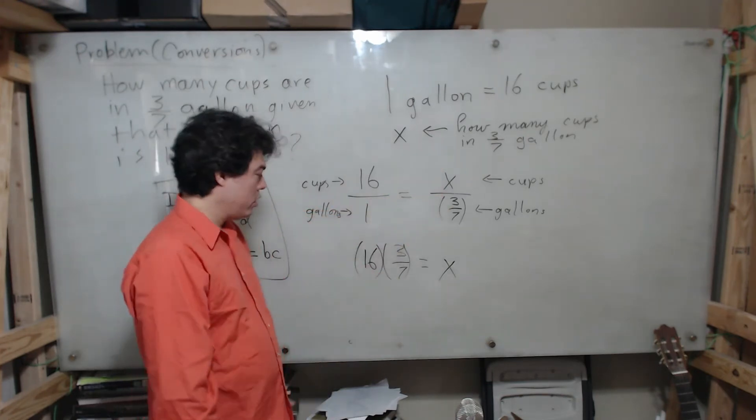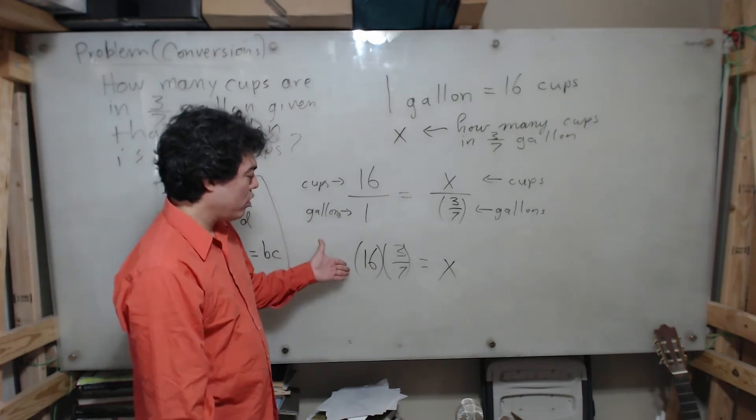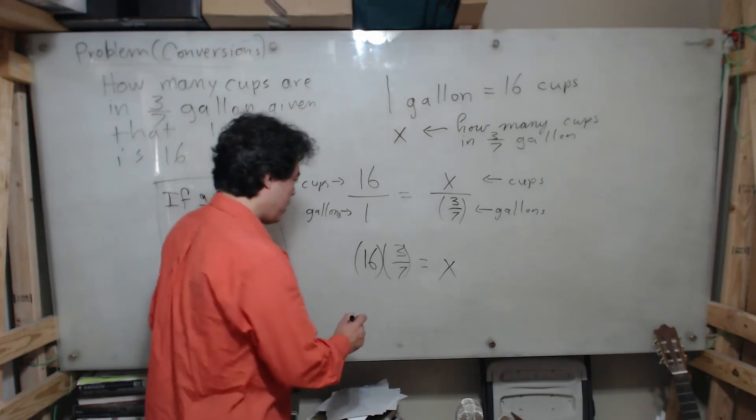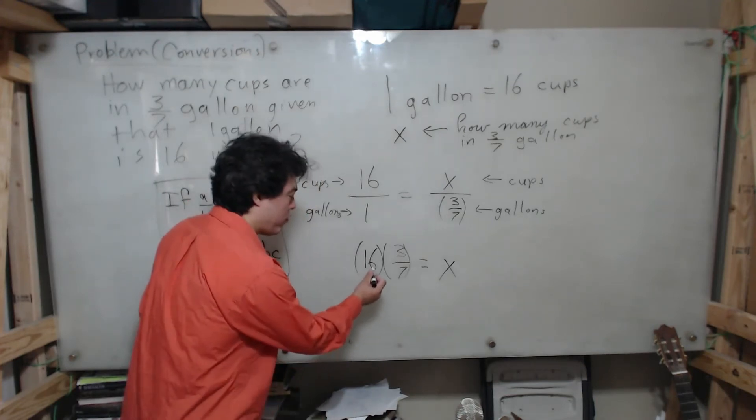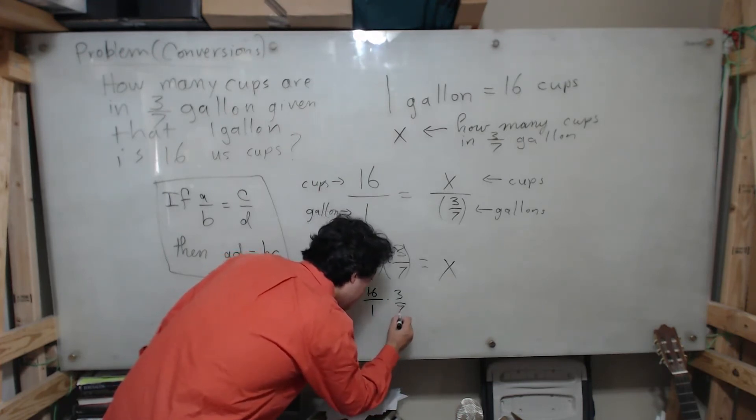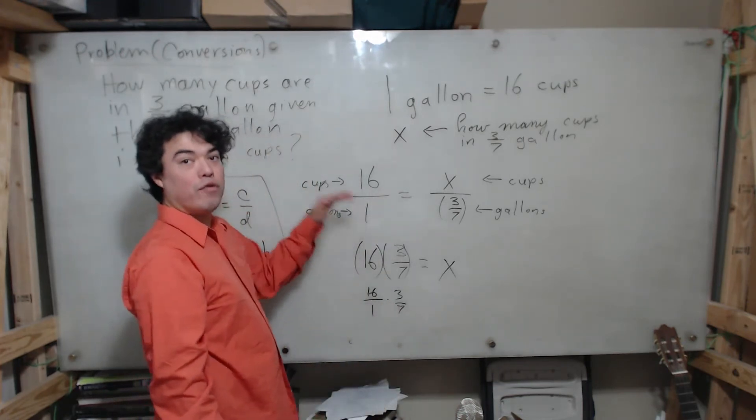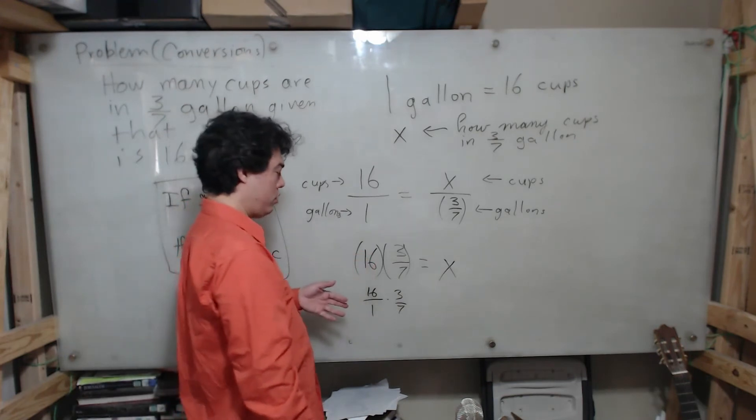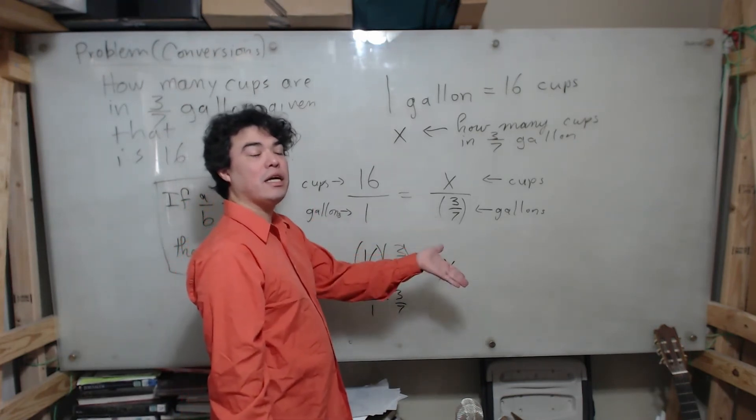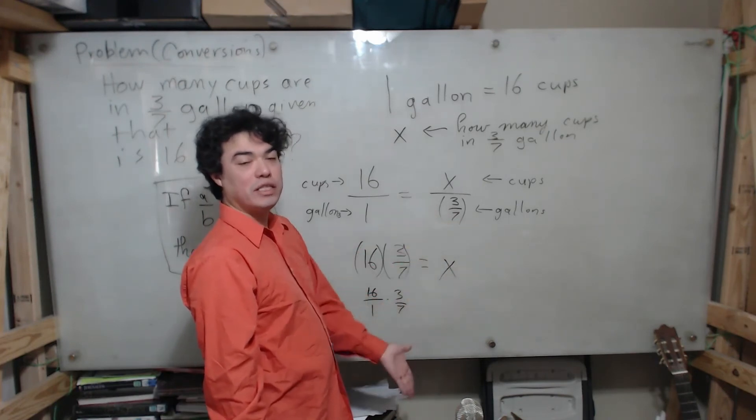Okay, so now we have a fraction times a whole number. What we can do is rewrite 16 as 16 over 1, times 3 over 7. Because any number when you put it over 1 becomes a fraction - we can write any number as a fraction by setting it as the numerator and setting 1 as the denominator.